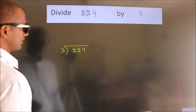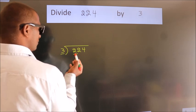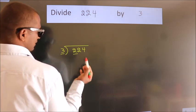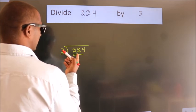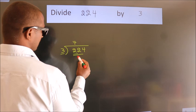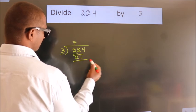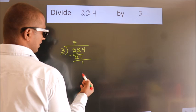Next, here we have 2, here 3. 2 is smaller than 3, so we should take 2 numbers, 22. A number close to 22 in the 3 table is 3 times 7 equals 21. Now we should subtract. We get 1.